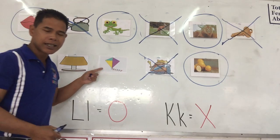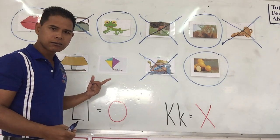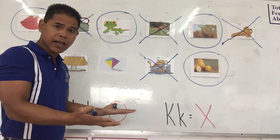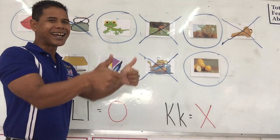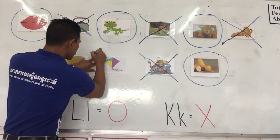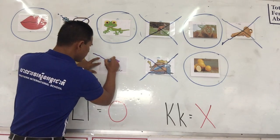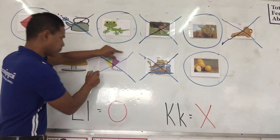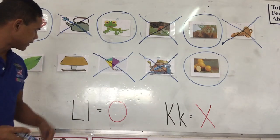Next one: kite. Kite. Also the letter K. Excellent job. So cross it out. Perfect.